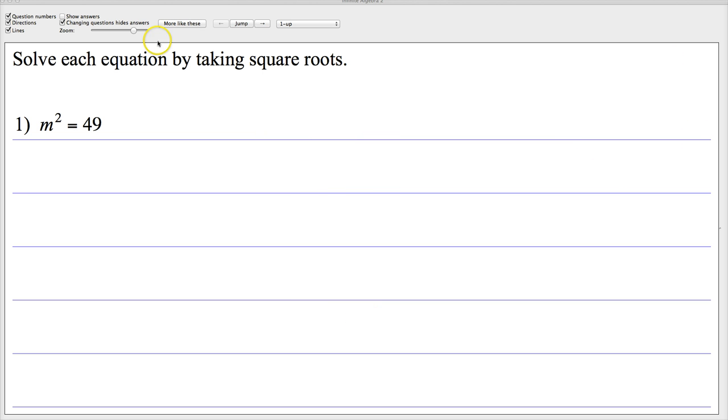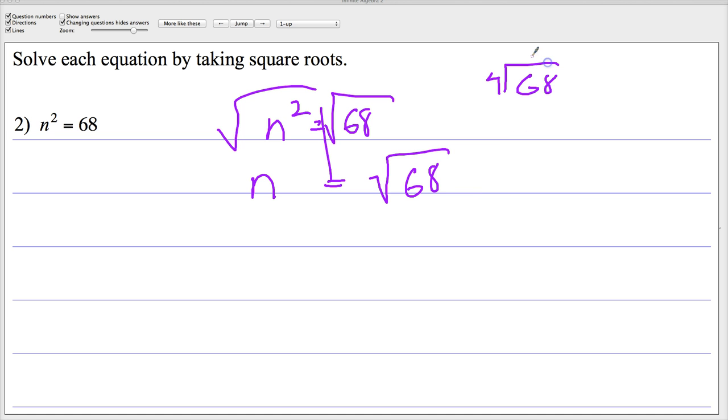Let's take it up just a little bit. n squared equals 68. Same type of thing, but it's not going to work as smoothly. I'm going to take the square root. n equals the square root of 68. Now I need to put it in simplest radical form. I know that 68 is divisible by 4, which is 68 divided by 4 gives you 17. So the square root of 4 times the square root of 17 equals 2 times the square root of 17, plus minus.